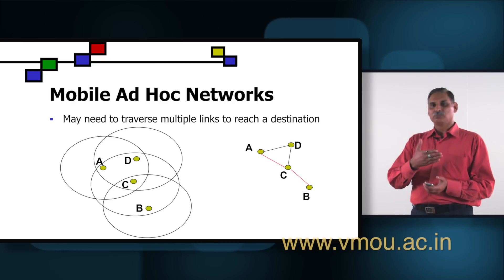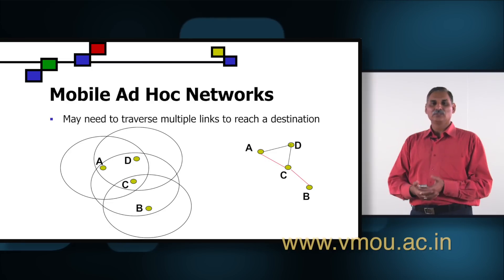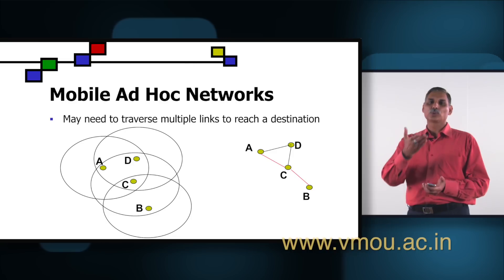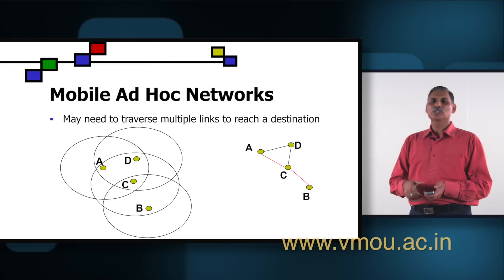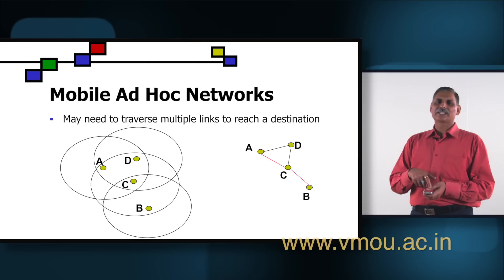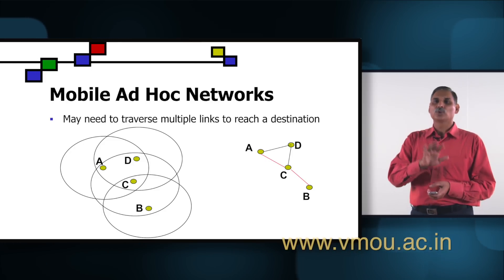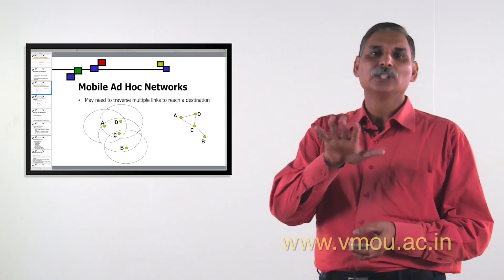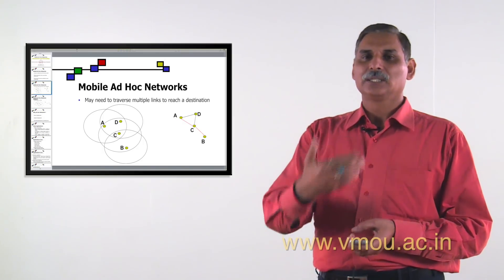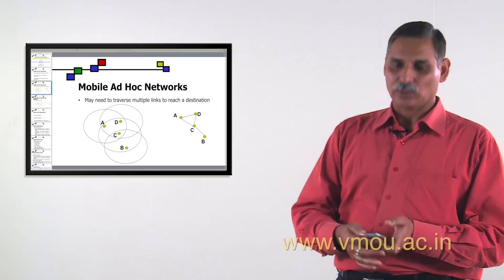There are multiple links available: A may go to D, D to C, and then ultimately reach B; or there is another path where it may go to C and then to D. Similarly, depending on how many nodes are in the communication range of source node A, that many paths will be available. Depending on my criteria of path search, it will select any of the paths from the available nodes.